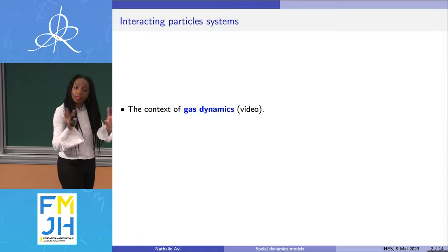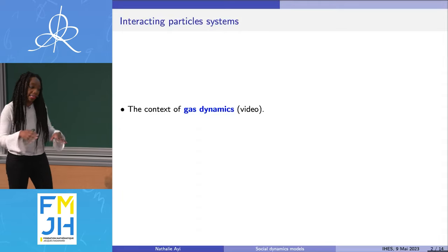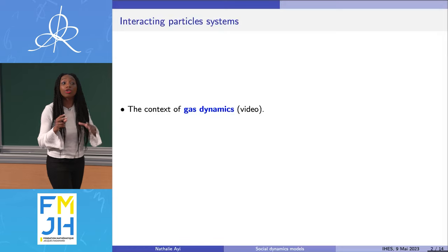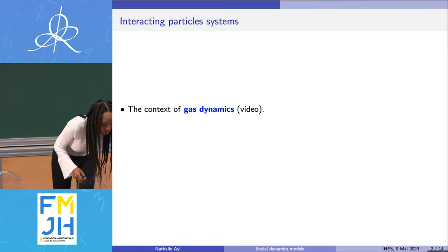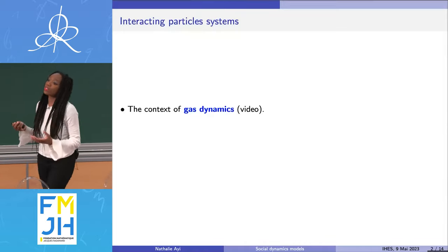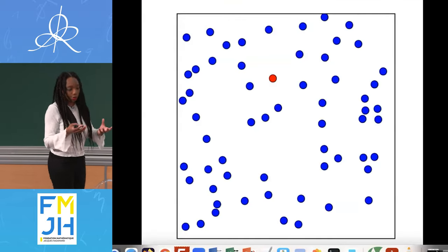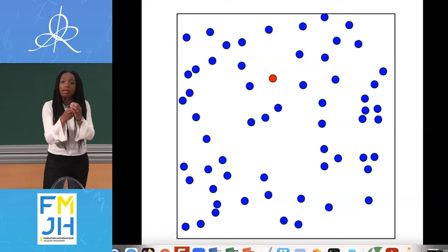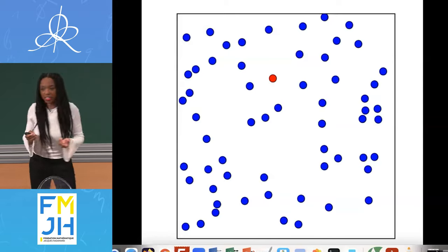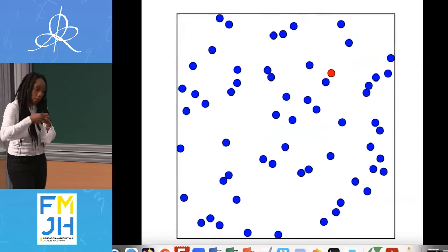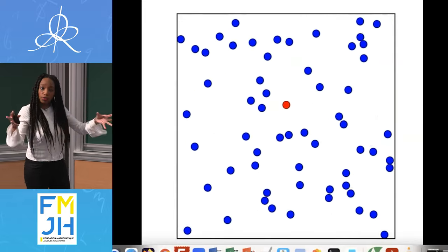For instance, in that room there is a gas, and the atmosphere is made of a huge amount of particles. One way of modeling it is to say that the particles of the gas are spheres and they have a position and a velocity. Basically, as you can see in this video, they move in the direction of their velocity until they collide, and when they do, they bounce.